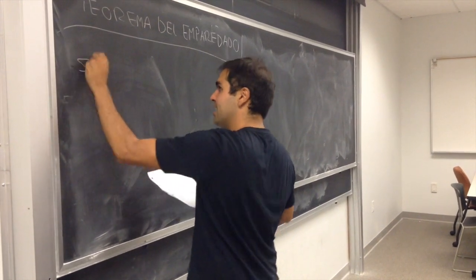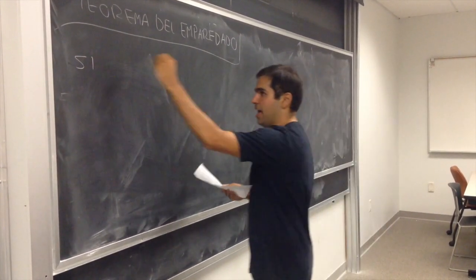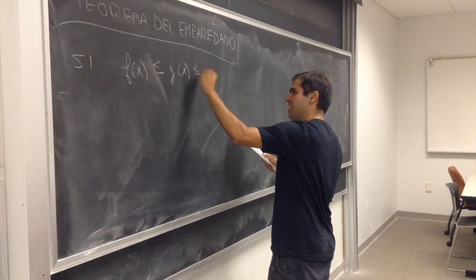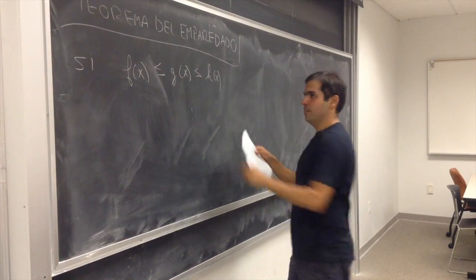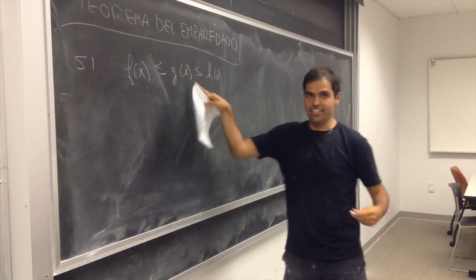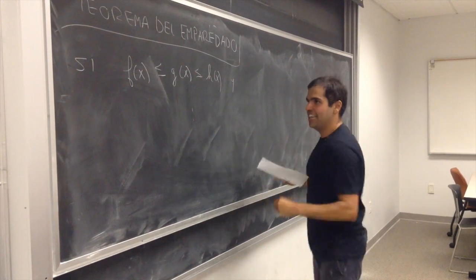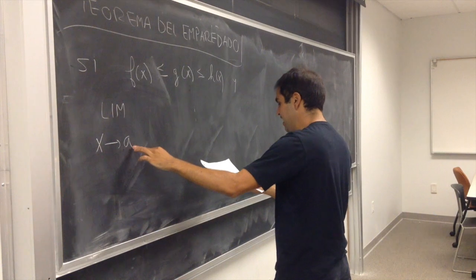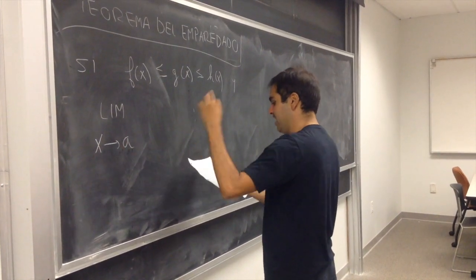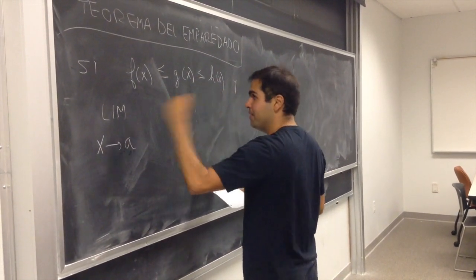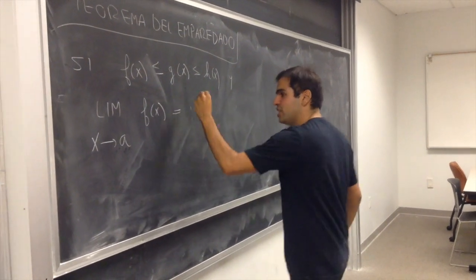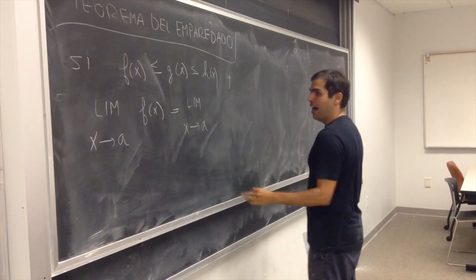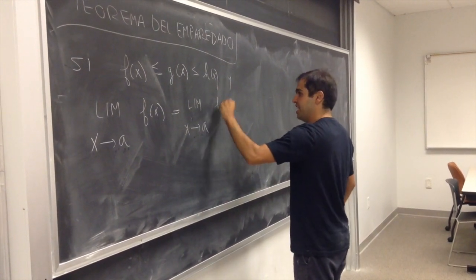Dice que si tenemos funciones f de x entre g de x y h de x, y el límite de x cuando x tiende a a de f de x es igual al límite cuando x tiende a a de h de x,